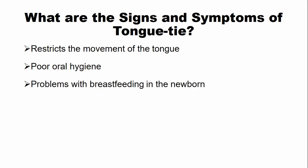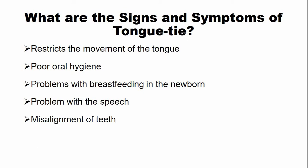In infants, there is a problem with breastfeeding. There is also a problem with speech. There is misalignment of teeth in individuals with tongue tie, because the tongue applies some force over the teeth, and when that force is missing, it may result in misalignment. There are also challenges with other oral activities such as playing some musical instruments.